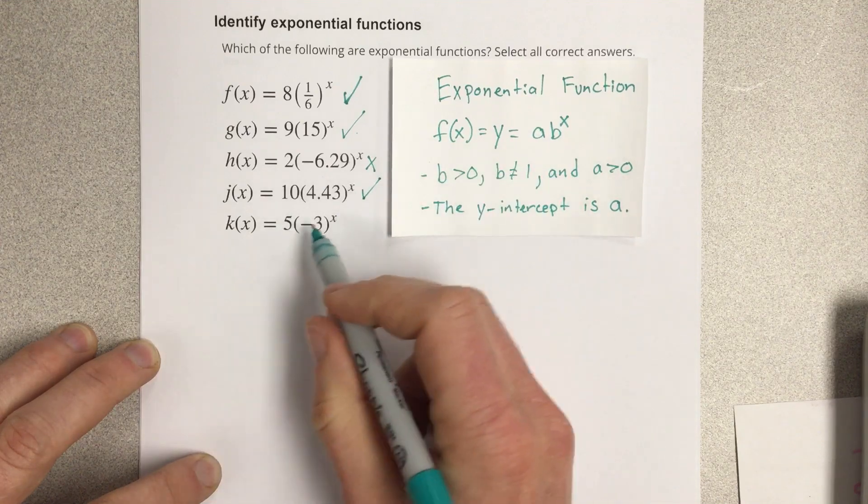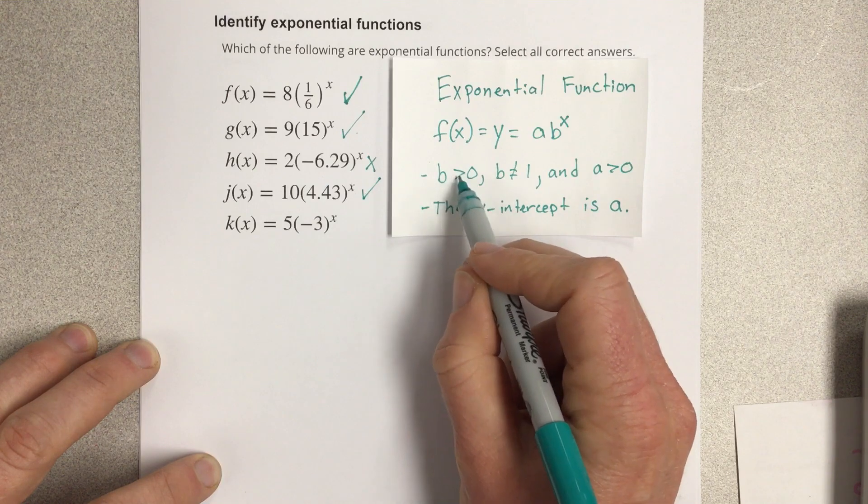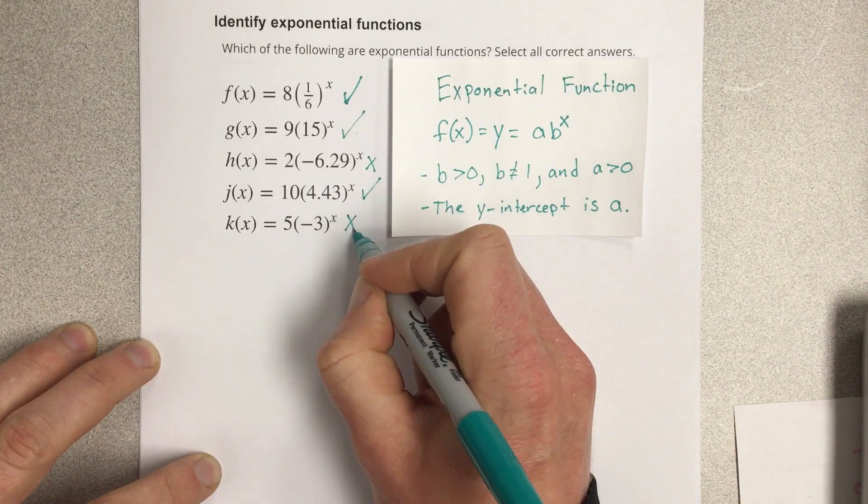And then finally k of x, we've got negative three for b. b needs to be greater than zero, so this automatically is not an exponential function.